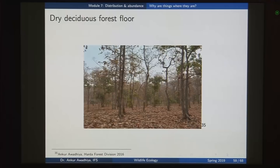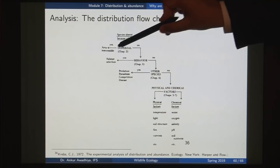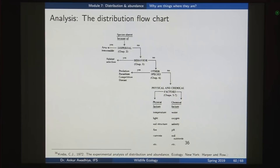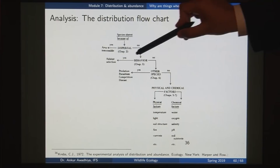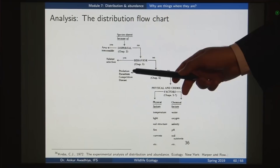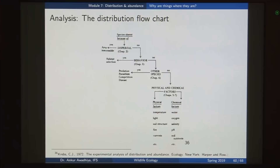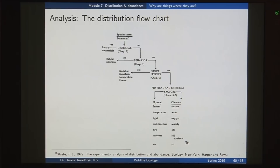To sum up: a species may be absent because of dispersal — the area is inaccessible. If not dispersal, perhaps a behavioral cause — habitat selection. If not that, perhaps another species — predation, parasitism, competition, or disease. If not that, perhaps physical and chemical factors — temperature, light, availability of water, oxygen. Using all of these factors, we can come to a conclusion about why species are found in some areas and not others. That is all for today. Thank you for your attention. Jai Hind.